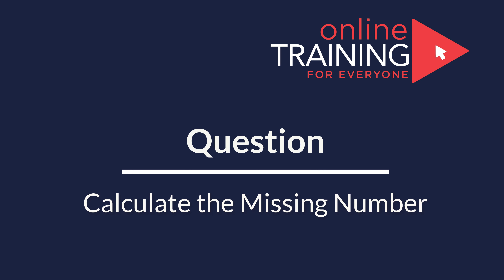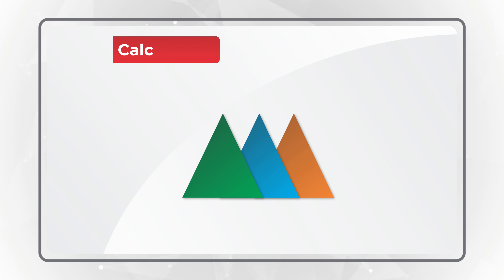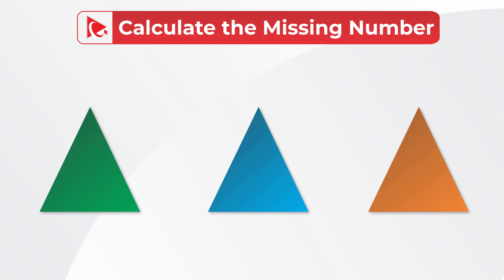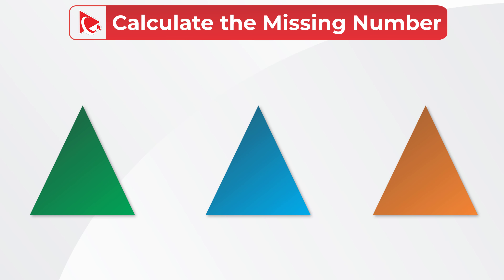Here is a very interesting question to see how quickly and effectively you can solve the challenge. You are presented with three triangles, each with numbers in the corners and a number in the middle. The first triangle has outside numbers 4, 18, and 2 with 3 in the middle. The second has 6, 56, and 1 outside with 8 in the middle. The third triangle has 3 in the middle and 5 and 103 on the outside, with a missing number in the upper right corner.